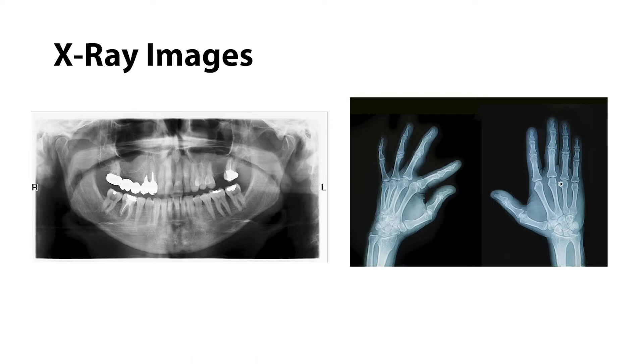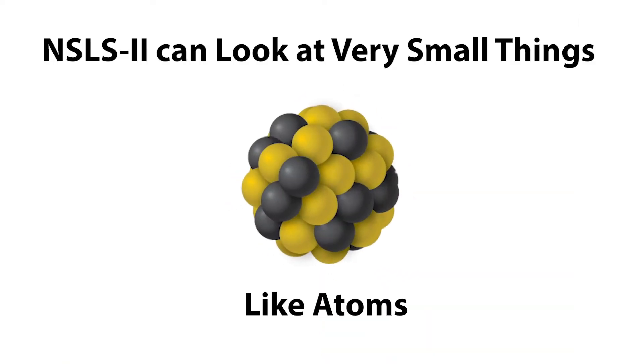Now you may be familiar with x-rays when you go to the doctor or the dentist office but the x-rays that we make are very different. They're extremely bright and extremely small beams of x-rays that we shine on very small samples in order to understand their atomic structure. So we want to look down into the very small parts of individual atoms and molecules. And that's what the synchrotron does.